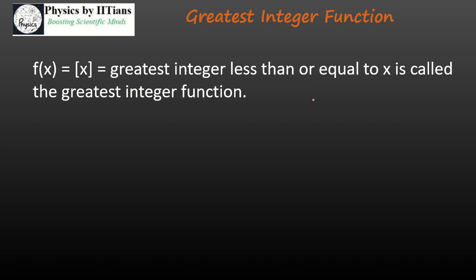So first, what is the greatest integer function? If we define a greatest integer function, it is the greatest integer that is less than or equal to x. So if I am writing greatest integer of 3.7, that means it will give you the greatest integer that is less than or equal to 3.7.